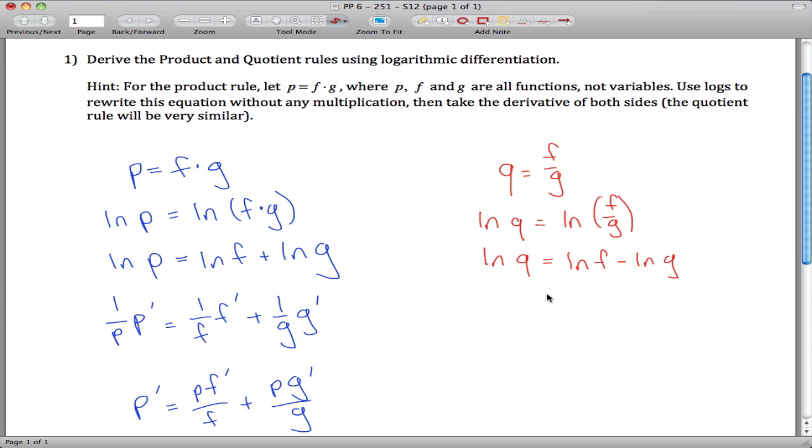Alright, take the derivative of both sides. To do so, you're going to use implicit differentiation. So we get 1 over Q, Q prime is 1 over F, F prime, minus 1 over G, G prime.